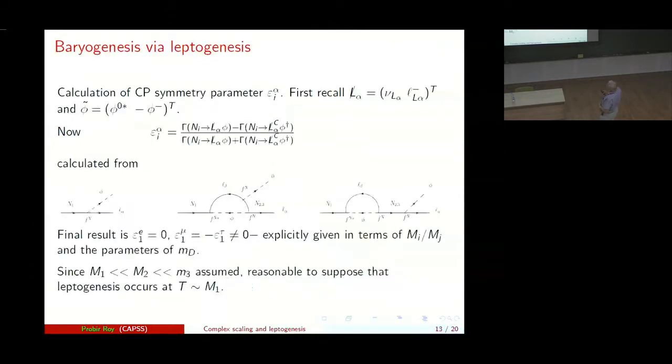Now let us come to baryogenesis via leptogenesis. For that, the first step is a calculation of the CP asymmetry parameter. Recall that the lepton doublet can be regarded in this notation as that and the Higgs doublet as that. So the CP violating decay asymmetry parameter is when the heavy neutrino, Majorana neutrino goes to the lepton doublet plus the Higgs doublet minus the charge conjugated divided by the charge, so this should be capital L. So this is obtained from an interference between the tree diagram and the one-loop diagram. And with our form of the neutrino mass that you automatically get, epsilon_1E is 0 and epsilon_1_mu equals minus epsilon_1_tau, not equal to 0. And there are explicit forms which one can obtain in terms of the ratios of the heavy neutrino masses, M_I over M_J and the parameters there.